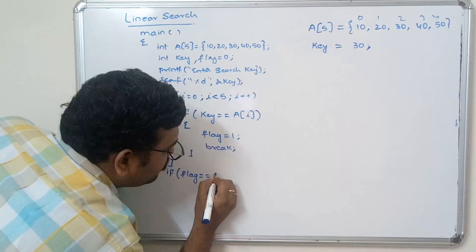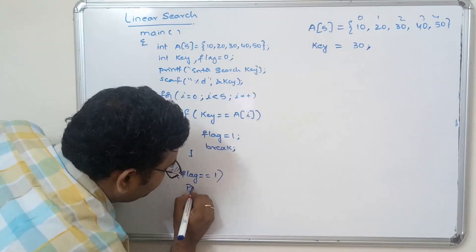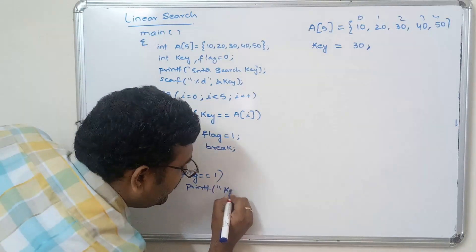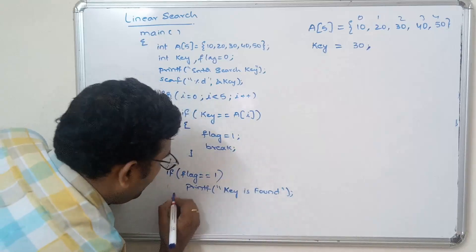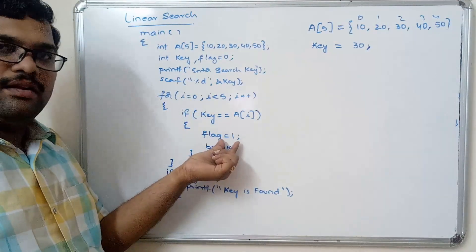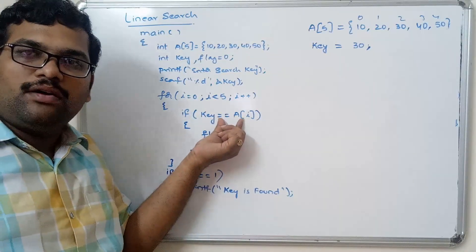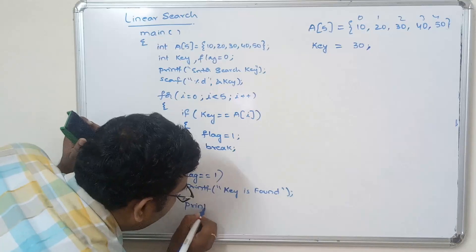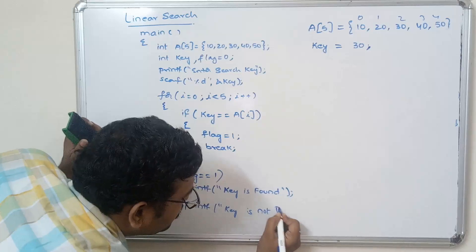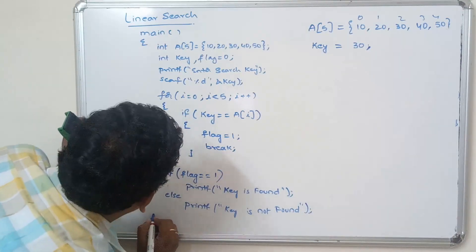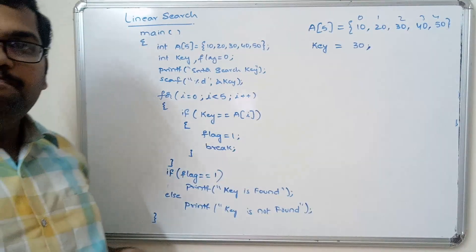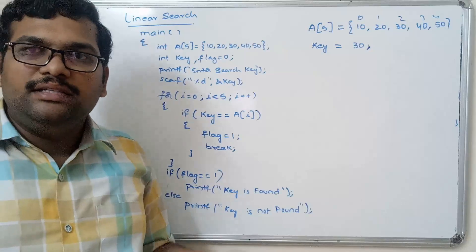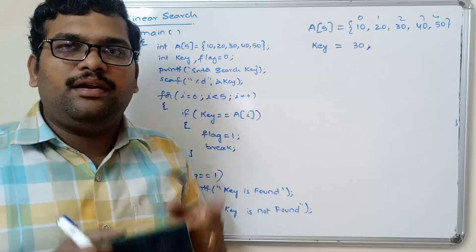Now check the condition: if flag equals 1, it implies the key was found, so printf 'key is found'. The else block means if the flag is not equal to 1, meaning the key was not found for any element in the array, so printf 'key is not found'. Then close the main function. This is a simple program to implement linear search — we are simply comparing the key element with every element in the array.